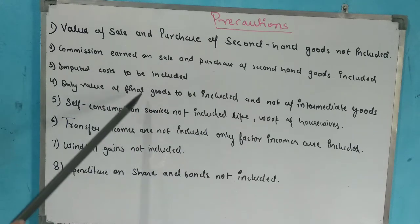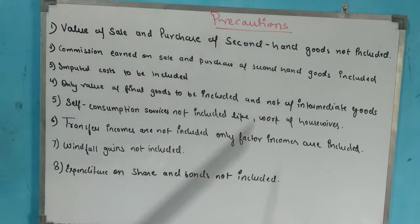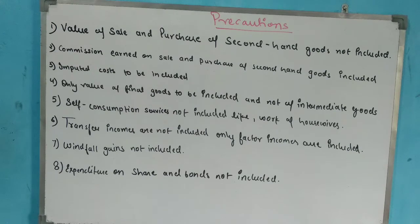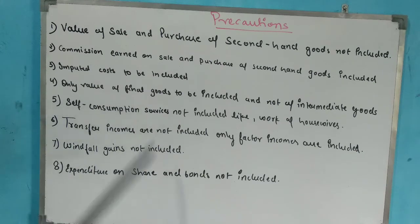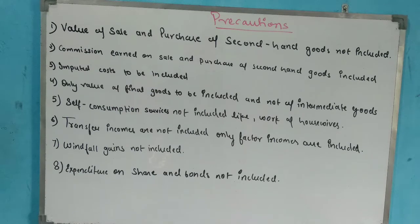If they had sold it in the market instead of using it themselves, it would have generated income for the country, so imputed costs must be included in national income. Next: only the value of final goods is to be included — not intermediate goods and not second-hand goods. Fifth precaution: self-consumption services are not included, because calculating their market value is impossible — for example, the work of housewives cannot be given a market value.